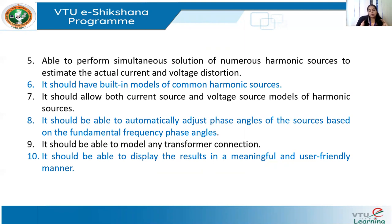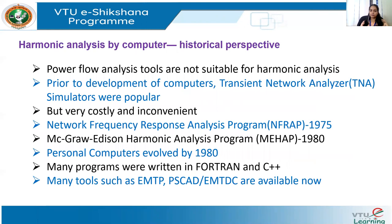These are the main characteristics or criteria for performing harmonic analysis using a computer model. When choosing a computer model, we should verify it can handle large systems, model harmonic sources with inbuilt models, represent them as voltage or current sources, include all transformer connections, simultaneously simulate many harmonic sources, and output voltage values. Now let us have a brief look at what computer tools are available for harmonic analysis. Harmonic analysis cannot be done manually — mathematical analysis is very difficult — so we depend on various computer tools.